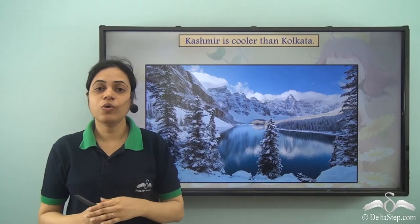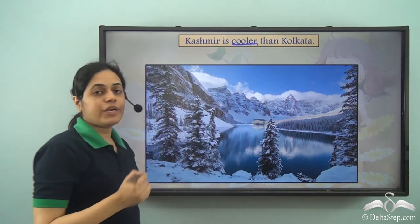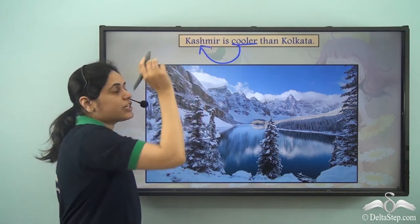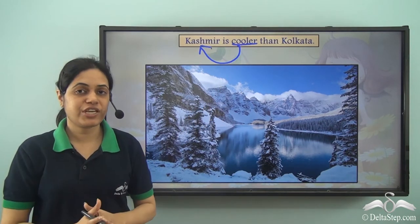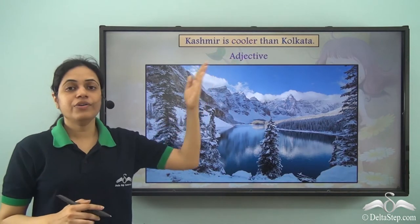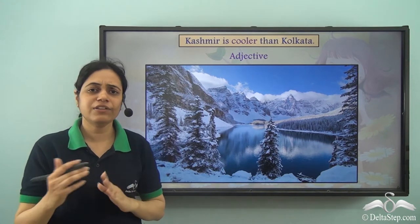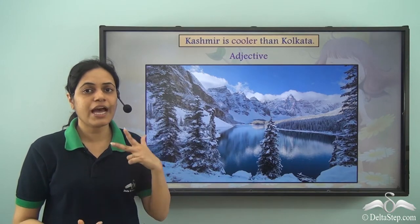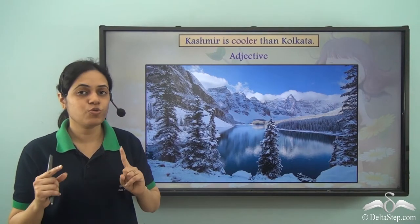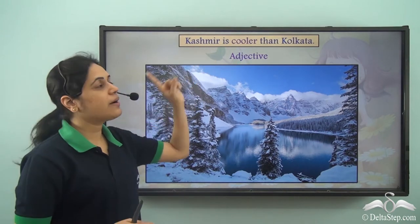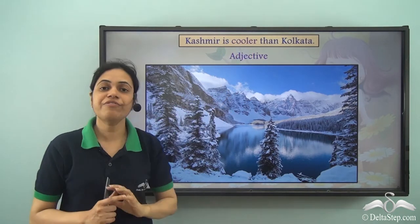'Kashmir is cooler than Kolkata.' Here cooler is an adjective because it is describing the noun Kashmir. Cooler is an adjective of comparative degree — adjectives can take three forms: positive, comparative, and superlative degree. Comparative degree adjectives compare between two people, places, or things. Here we are comparing two places using the word cooler, so cooler is an adjective of comparative degree.